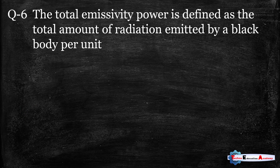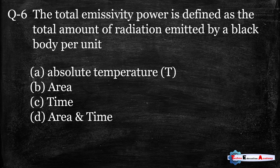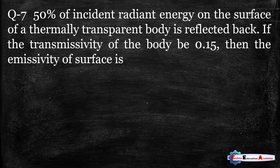Question number six: the total emissive power is defined as the total amount of radiation emitted by a black body per unit time. Option C is the correct answer.